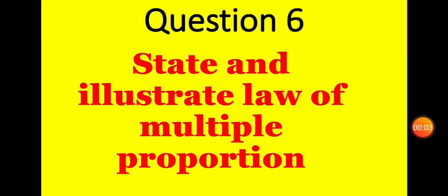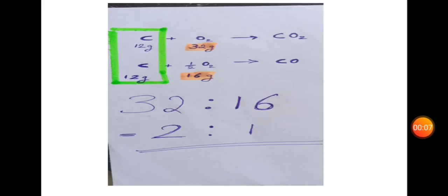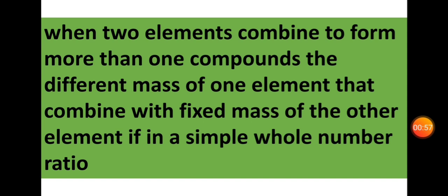Question: state and illustrate the law of multiple proportions. C + O₂ → CO₂ and C + ½O₂ → CO. When two elements combine to form more than one compound, the masses of one element that combine with a fixed mass of the other are in a simple whole number ratio — this validates the law of multiple proportions.